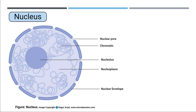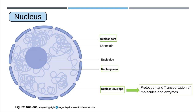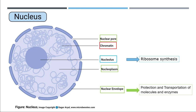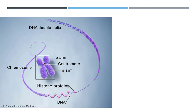Within the nucleus I find different kinds of organelles. I selected three highlighted in green boxes: nucleopore, nucleoplasm, and nuclear envelope. These three organelles are involved in the protection and transportation of molecules and enzymes from cytoplasm to nucleus and back. The nucleolus is basically synthesizing ribosomes, and chromatin is what we are looking for — it has the DNA structure and hereditary information in it.